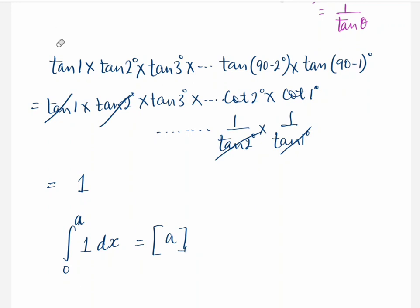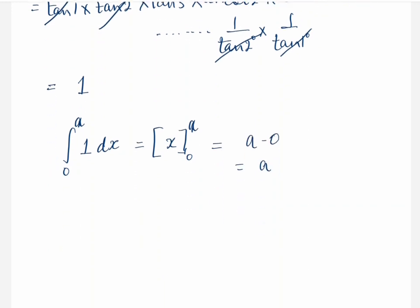Or in this case, we can say x evaluated from the limit of 0 to a. And that is going to give us a minus 0, which is a.